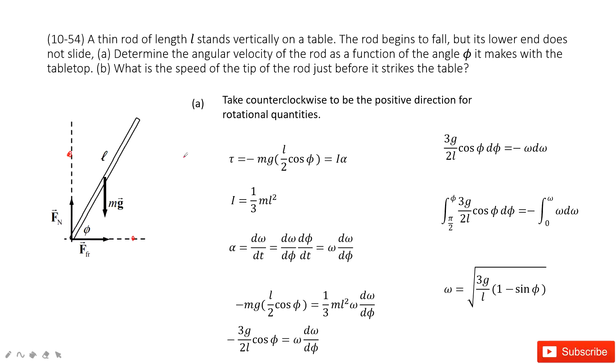We consider the counterclockwise as a positive direction. So it falls down. Now, we need to determine the angular velocity of the rod as a function of angle phi. So, how can we do that?